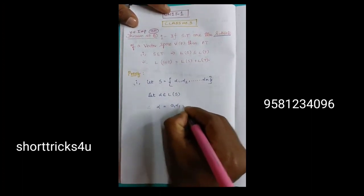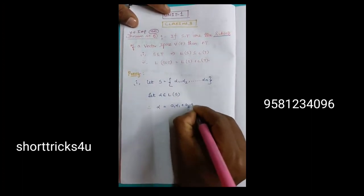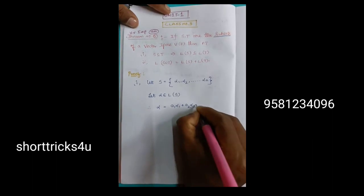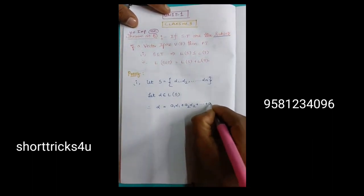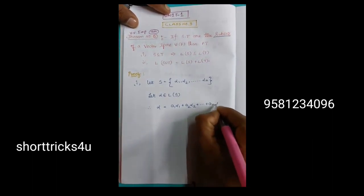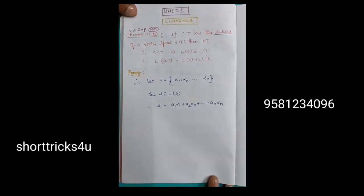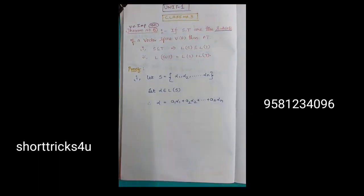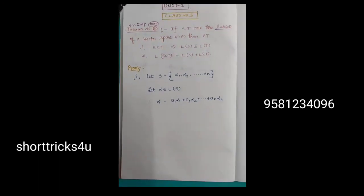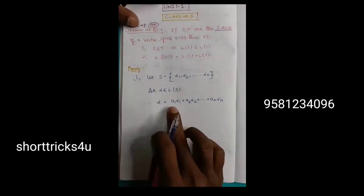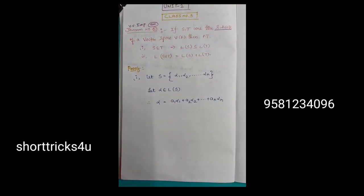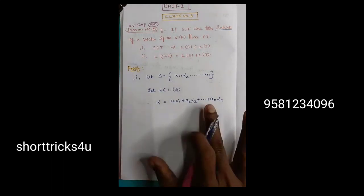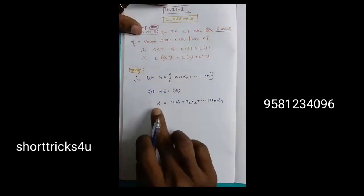I can write a linear combination: A1·Alpha1 + A2·Alpha2 + ... + An·Alpha n. That means we have the same value, so alpha is equal to that linear combination.